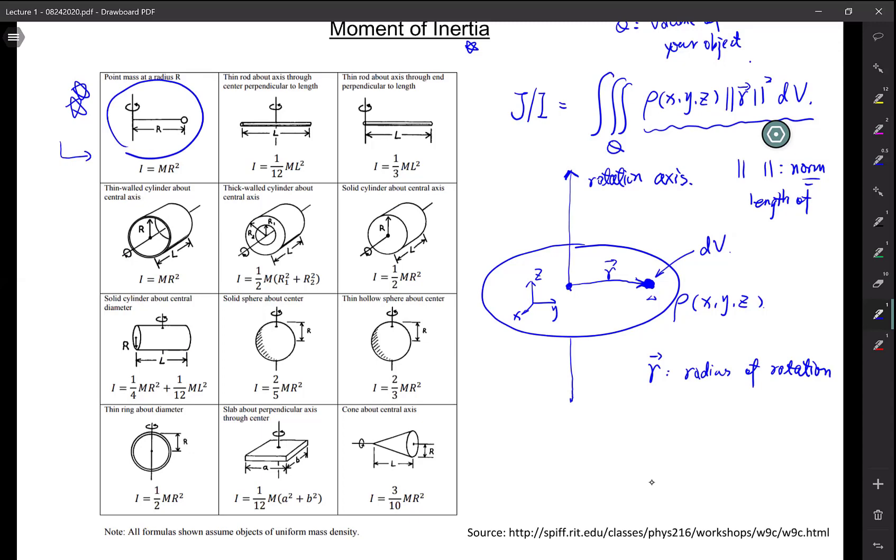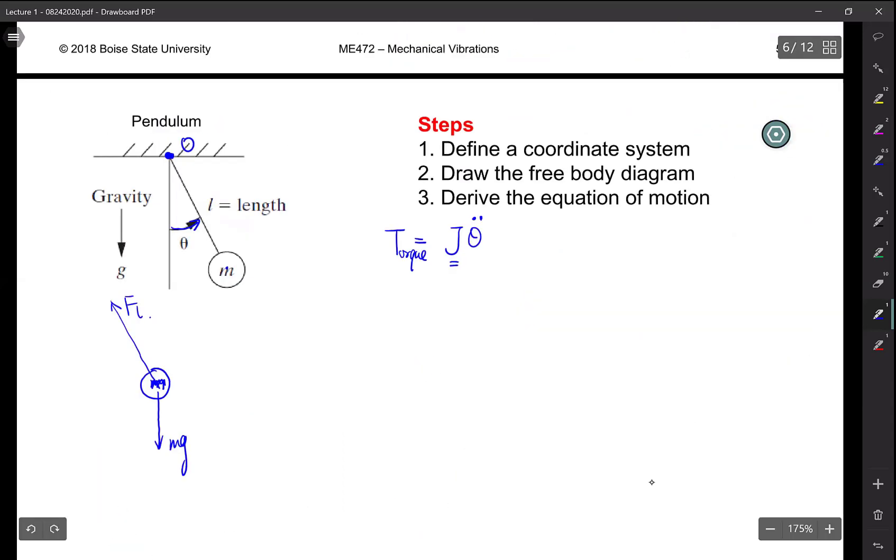Your I is just mass times the distance squared, so that means in this case your J is the mass times the distance L squared.